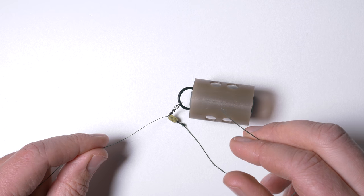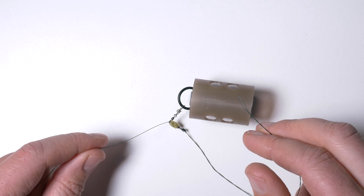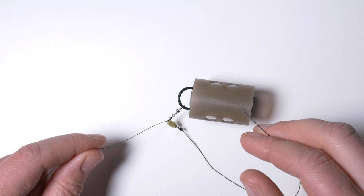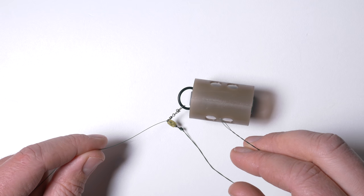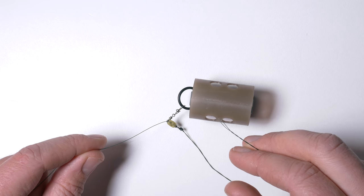This time I will demonstrate how to tie a feeder rig which allows you to avoid hook link spin-ups when distance fishing or using baits which tend to spin when retrieving and as a result ruin your hook links.